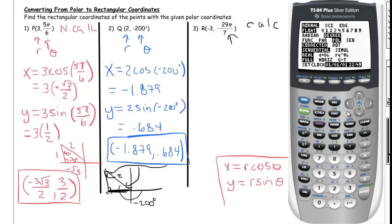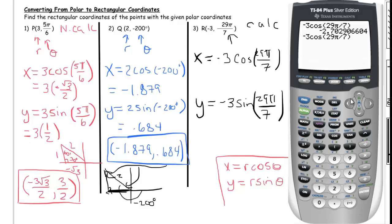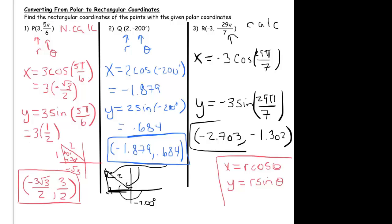Alright, welcome back, so what you should have gotten is that x equals negative 3 cosine of 29π over 7, y is negative 3 sine of 29π over 7, and those coordinates turn out to be negative 2.703, negative 1.302.